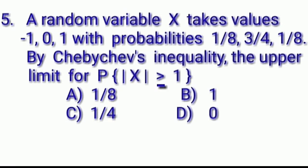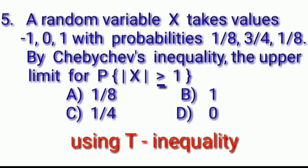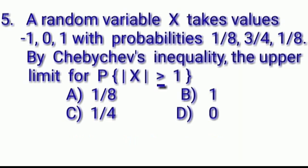Question number 5: A random variable x takes values −1, 0, 1 with probabilities 1/8, 3/4, 1/8. By Chebyshev's inequality, the upper limit for P(|x| ≥ 1) — Options: A: 1/8, B: 1, C: 1/4, D: 0. Answer: Option C, 1/4.